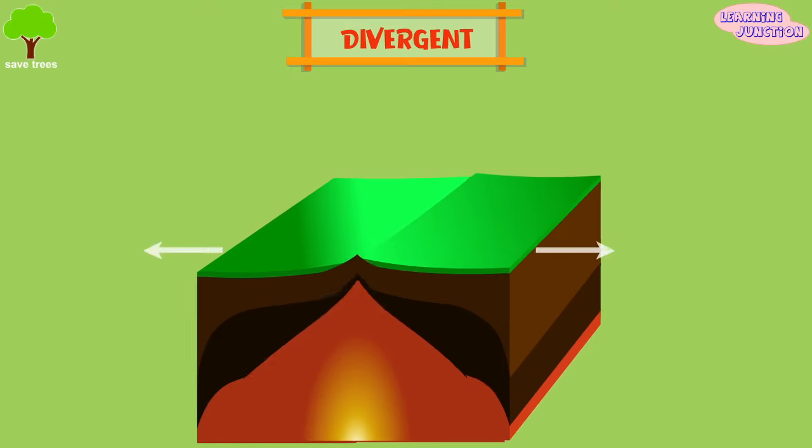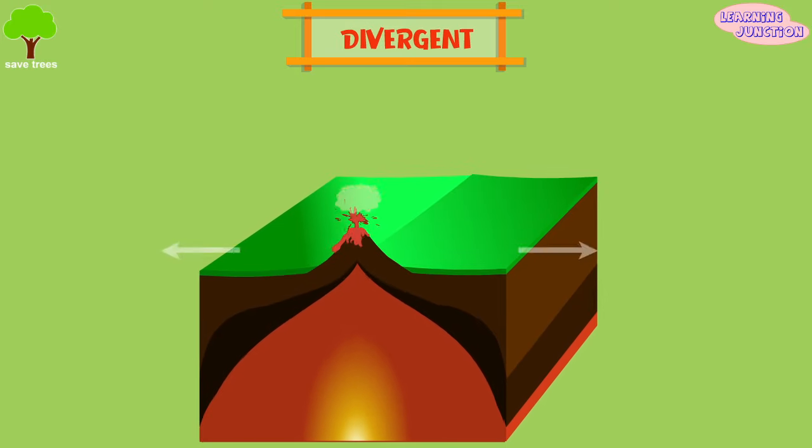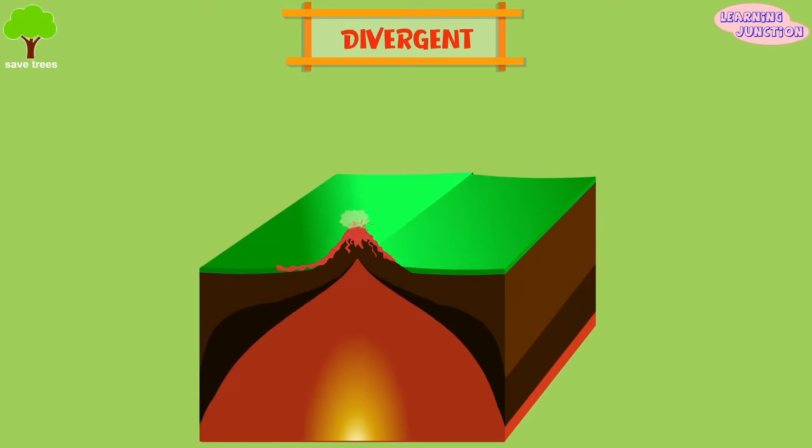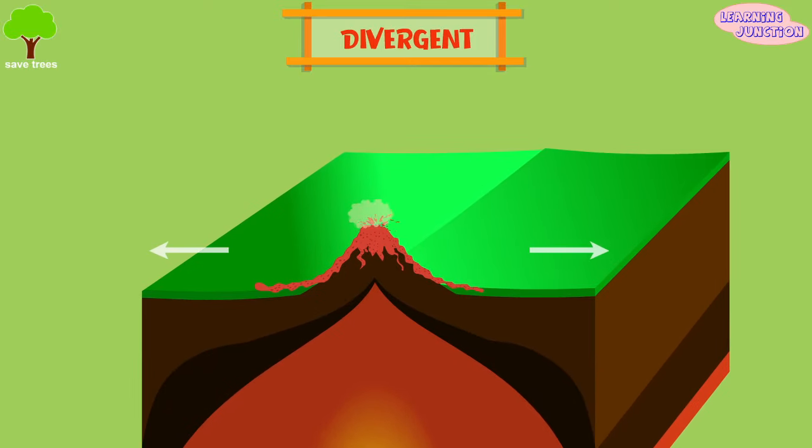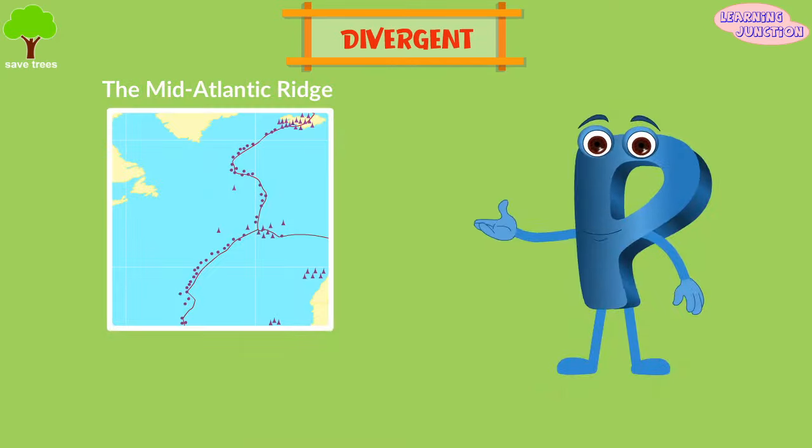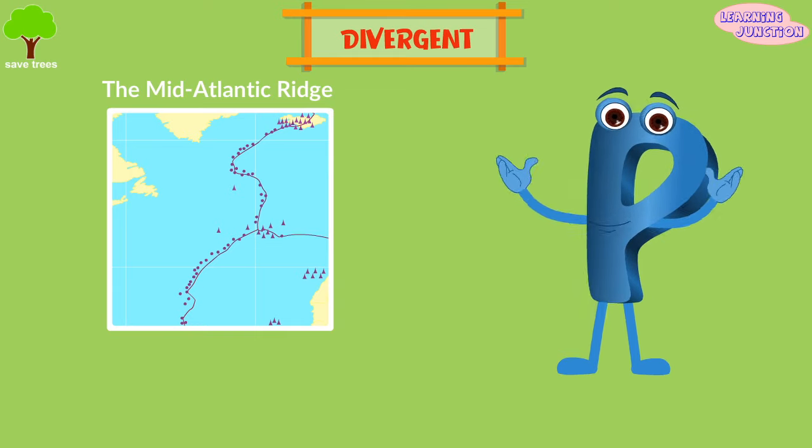Divergent. In this movement, the plates move apart. The magma from the interior of the Earth flows toward the surface and moves the tectonic plates away from each other. The mid-Atlantic ridge is an example of this type of plate boundary.